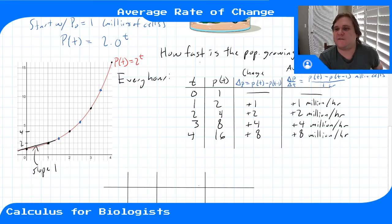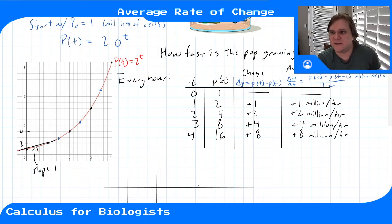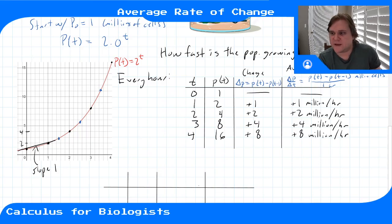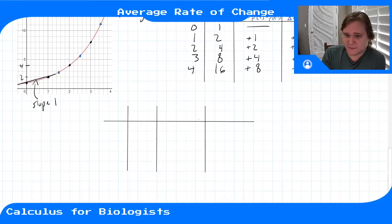So the answer to the question — how fast is the population growing — depends on which time interval we're looking at. Between hours zero and one, the average rate of change is one million per hour. Between hours one and two, it's growing faster at two million per hour on average. This answer depends on when in time we're looking, and it's also going to depend on how finely we're looking.